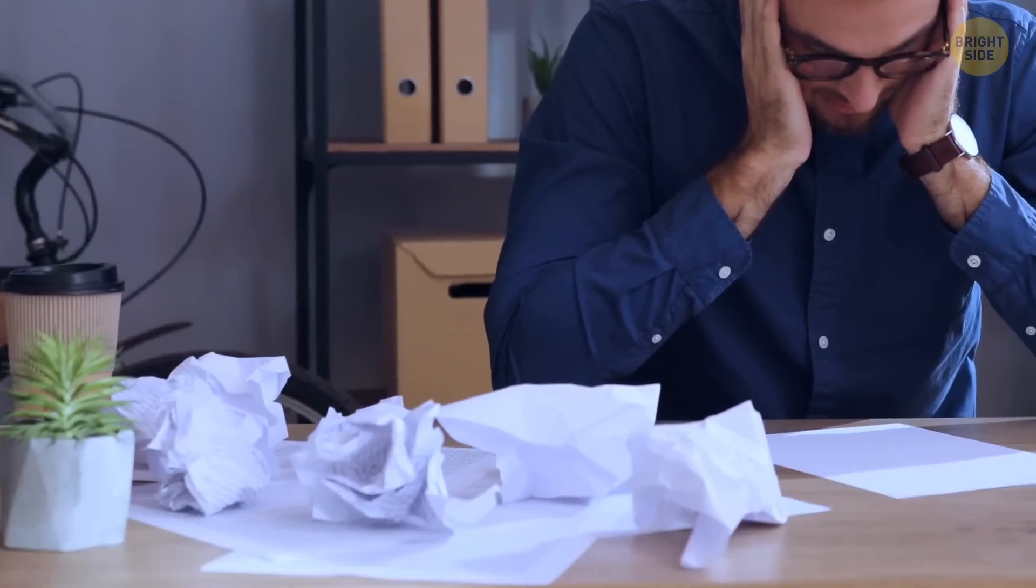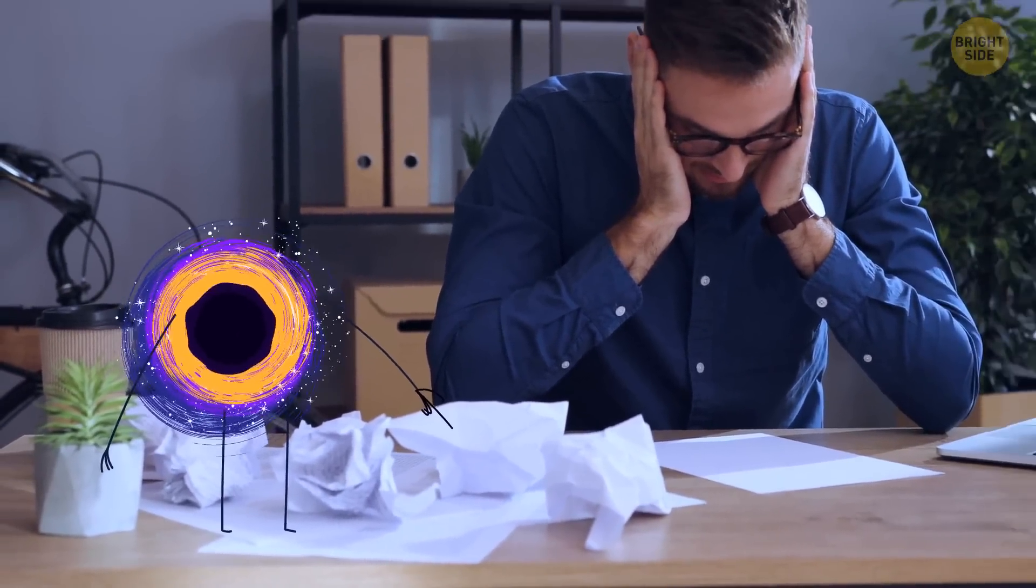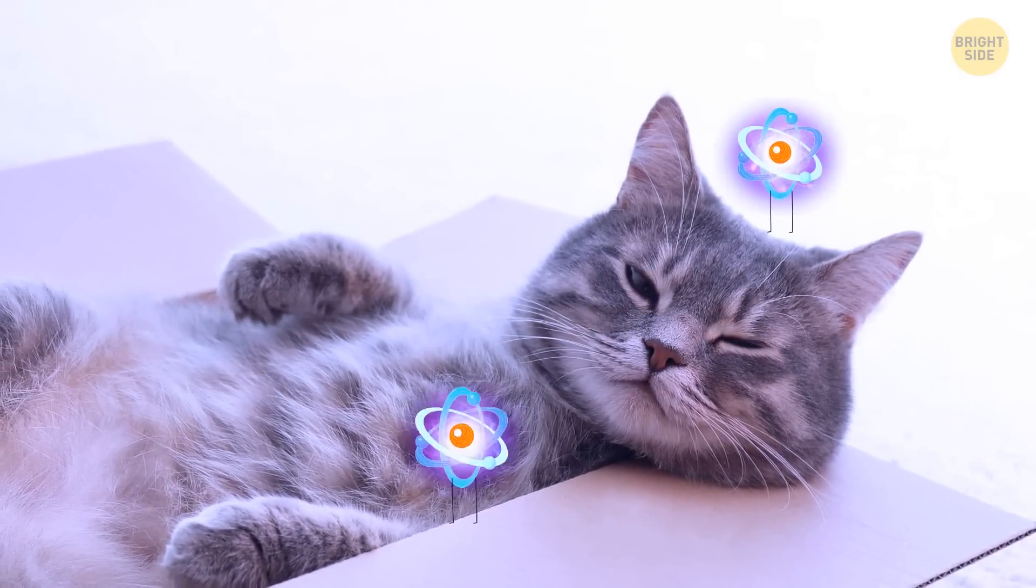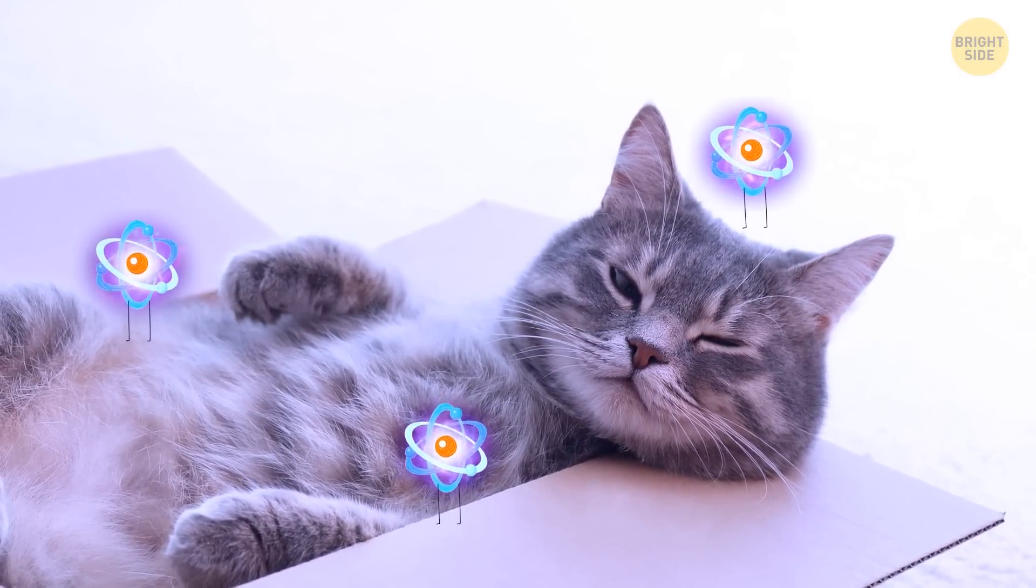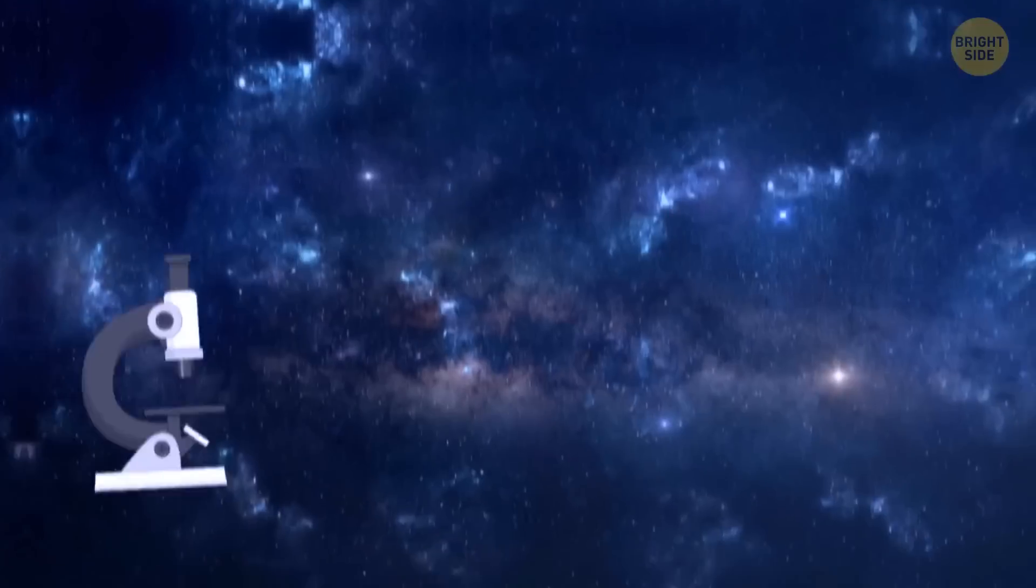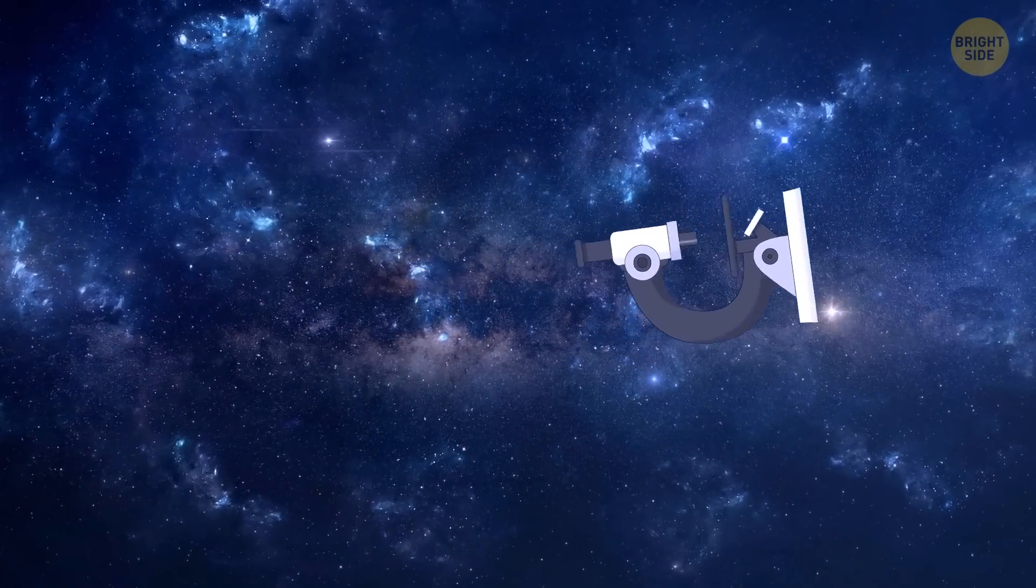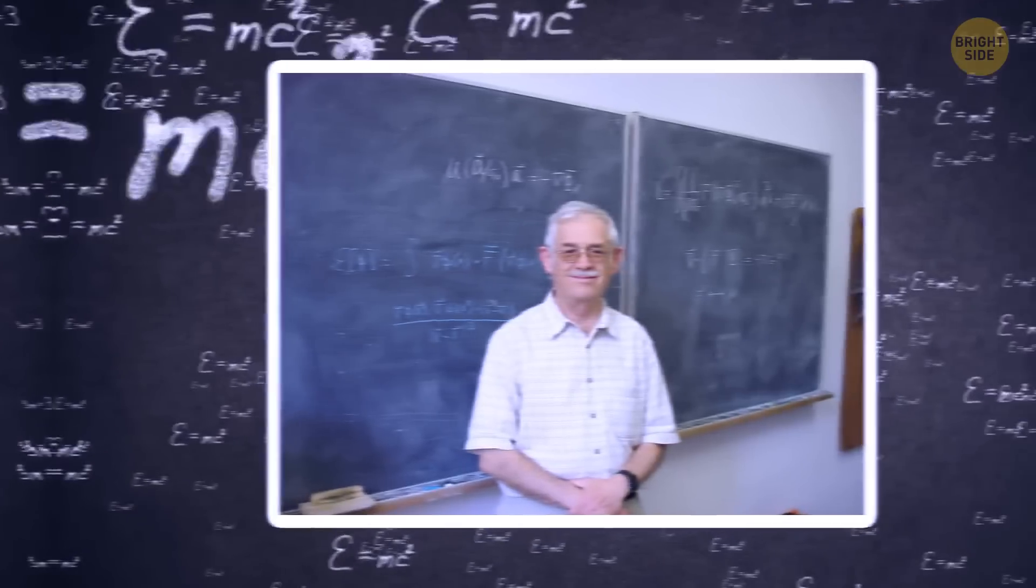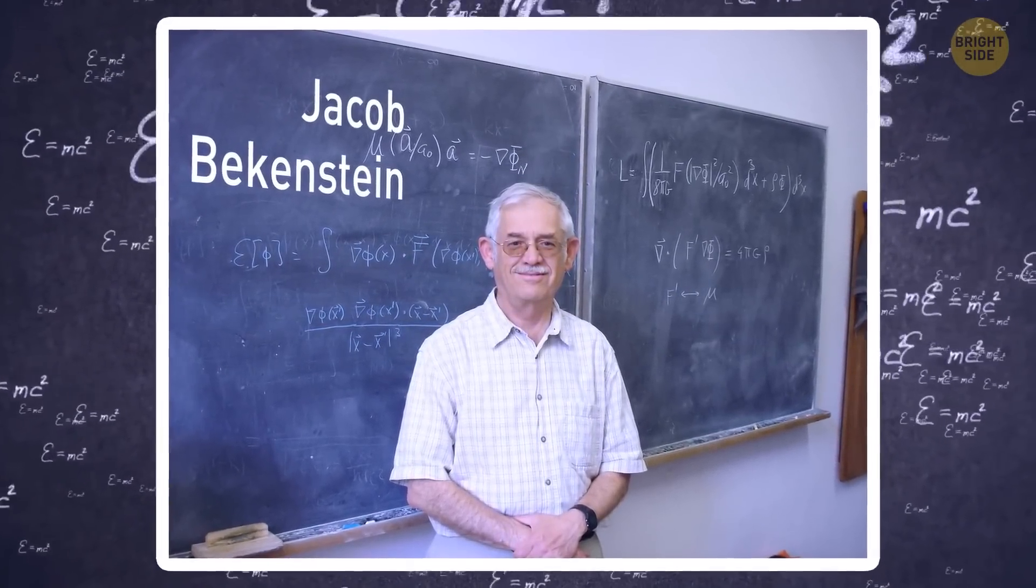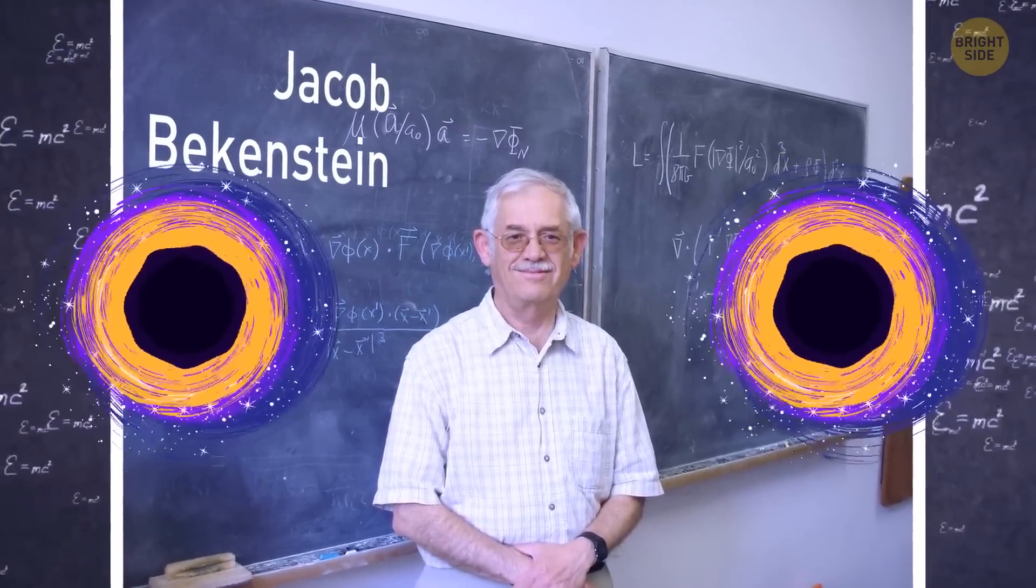Alright, but why do we need all this info now? Why is it connected to the recent discovery? You see, scientists thought, if teeny tiny particles in our universe behave like this, then what about some giant space objects? And so, they decided to direct their devices not into the microcosm, but into distant space. American and Israeli theoretical physicist, Jacob Bekenstein, was the first to suggest that black holes may have the same weird properties. But this theory had to be tested.